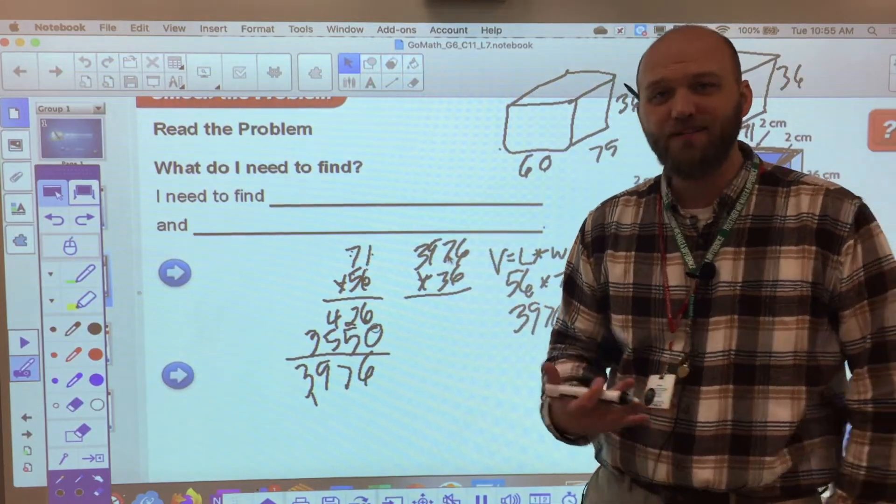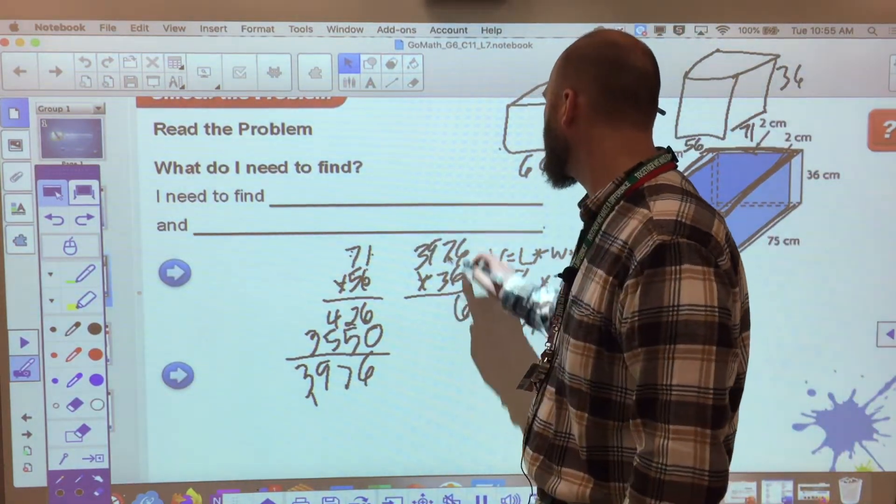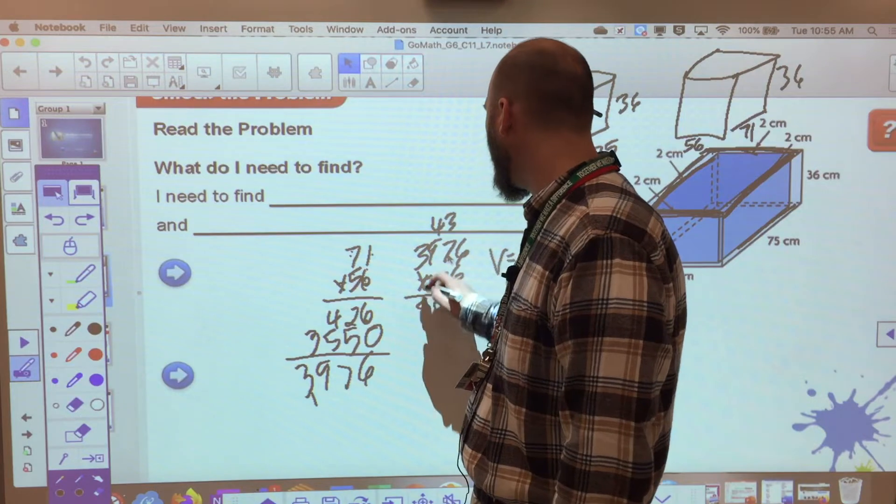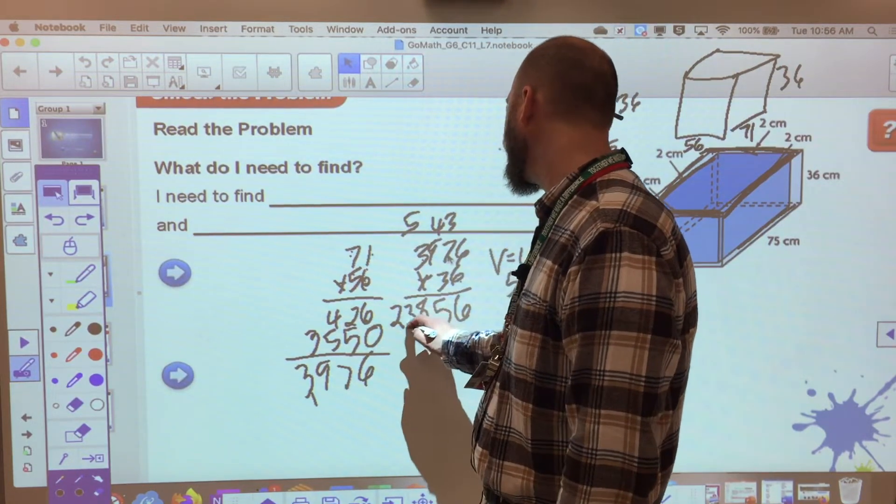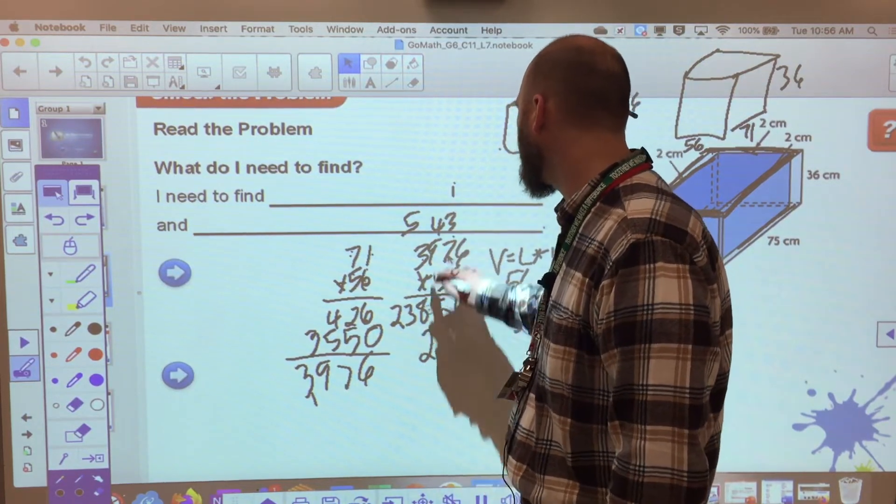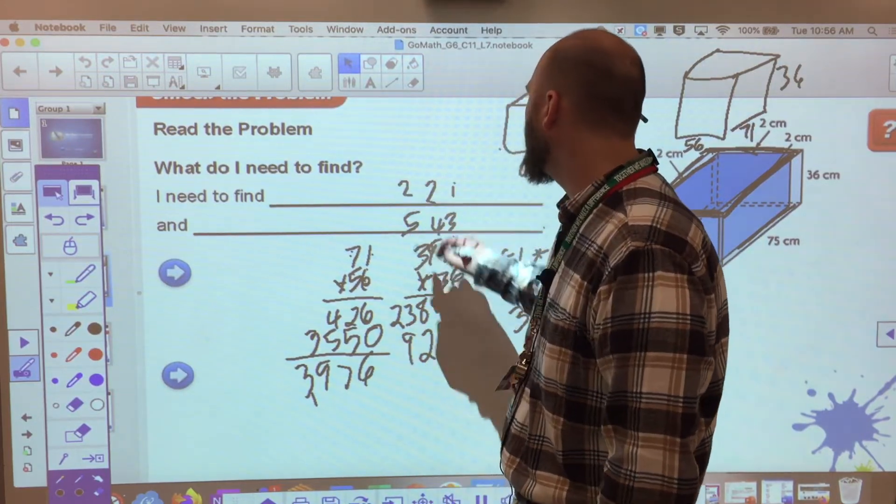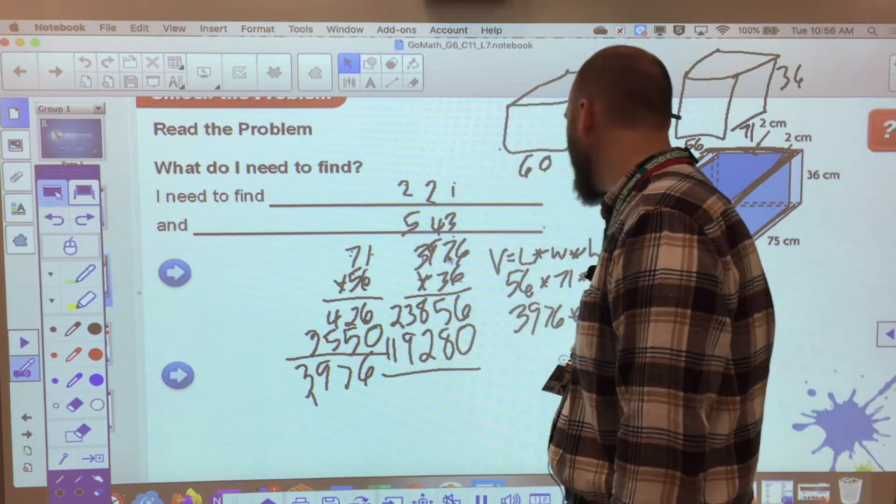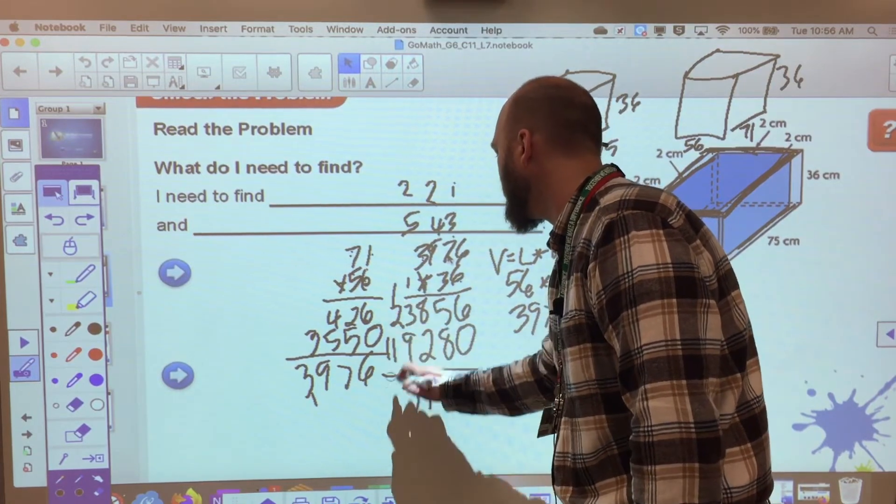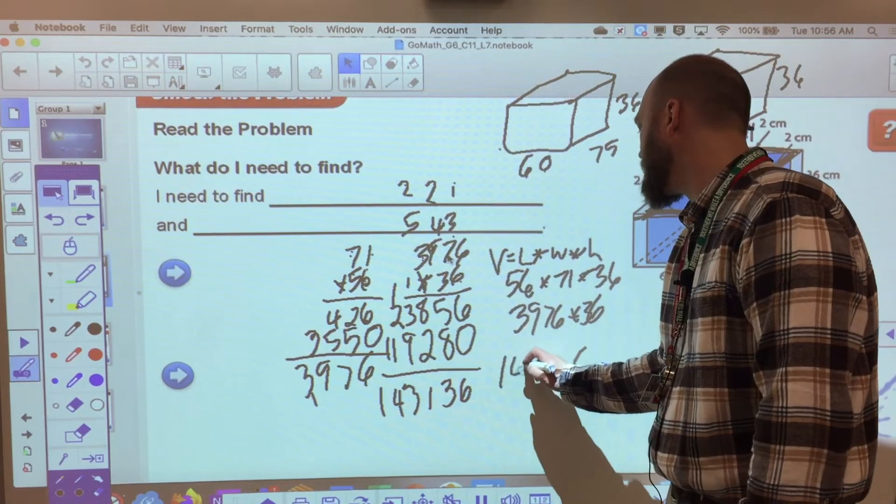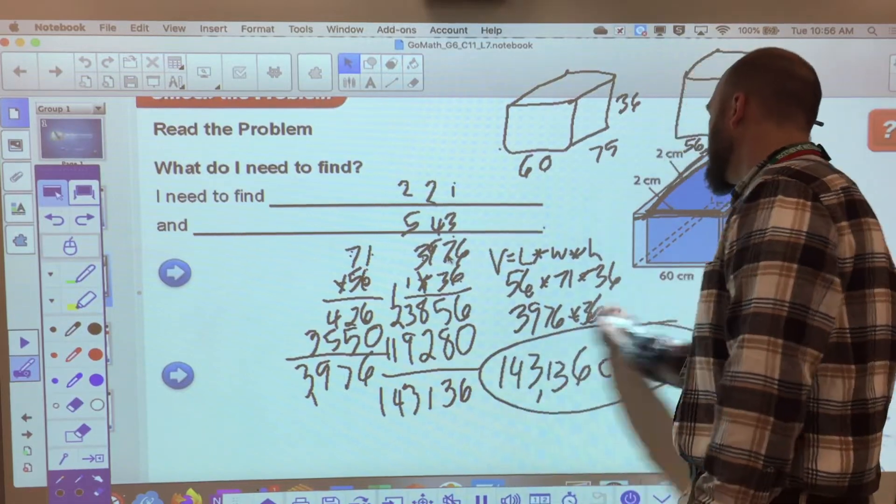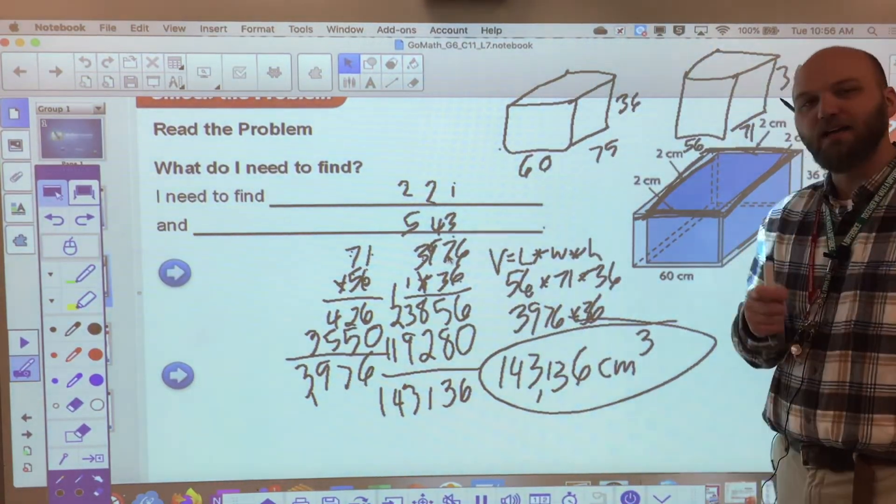3,976 times 36. And, of course, I'm doing this longhand. It's not going to hurt anything. It's just going to take me an extra couple seconds here. 6 times 6 is 36. 6 times 7 is 42. Plus 3 is 45. 6 times 9 is 54. Plus 4 is 58. And 6 times 3 is 18. Plus 5 is 23. Add my 0. 3 times 6 is 18. 3 times 7 is 21. Plus 1 is 22. 3 times 9 is 27. Plus 2 is 29. 3 times 3 is 9. Plus 2 is 11. Now, let's add them all together. And I get 6, 13, 11, 13, 4, 1, 143,136 centimeters cubed is the volume of my inside of my aquarium.